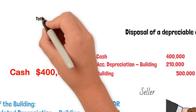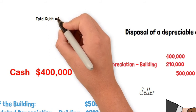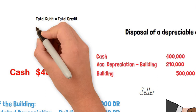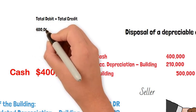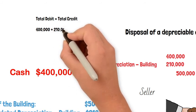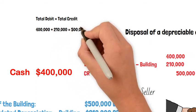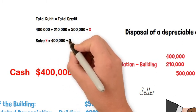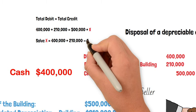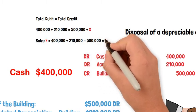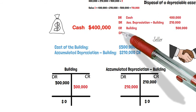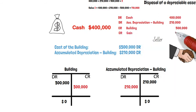Now, as we know, for each general entry the total debit has to equal total credit. Total debit equals $610,000, which is more than $500,000. The difference is $110,000, so that's the additional credit we need to make. And that's going to be a gain on the disposal of $110,000.